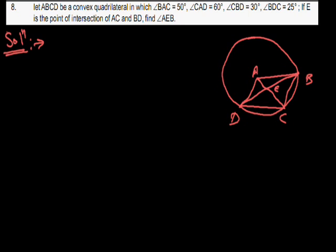ABCD is a convex quadrilateral and E is the intersection point of the diagonals. The given angles are: angle BAC = 50°, angle CAD = 60°, angle CBD = 30°, and angle BDC = 25°. We need to find the measure of angle AEB.